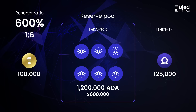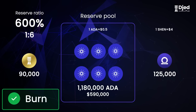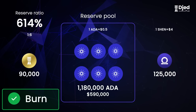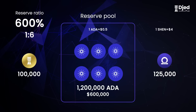Now let's try burning JED. If we burn 10,000 JED, it leaves us with 90,000 JED minted. This means that we took out of the contract 20,000 ADA, so now the reserve is left with 1.18 million ADA. This changes the ratio to 655%, so by burning more JED, we raised the reserve ratio.